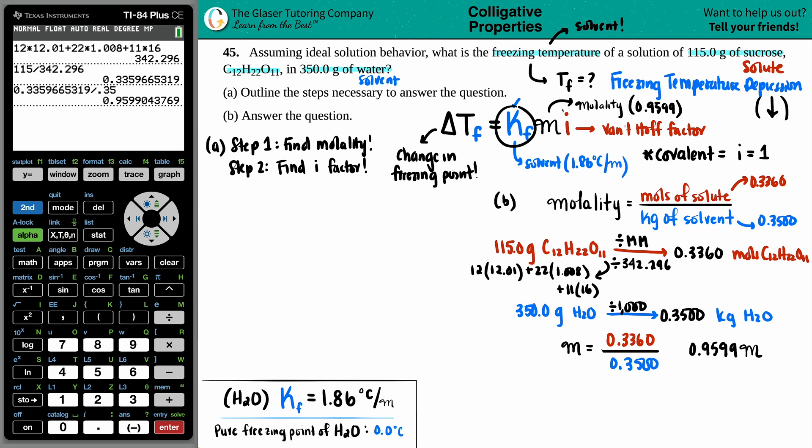So we have KF, we have the molality, and we have the van't Hoff factor. So step three is to find the change in the freezing temperature, the delta Tf. So maybe I'll do that over here. Delta Tf, the change in the freezing temperature,